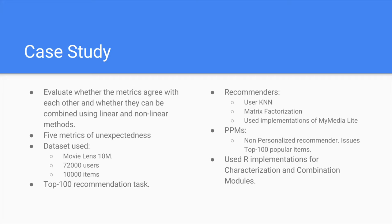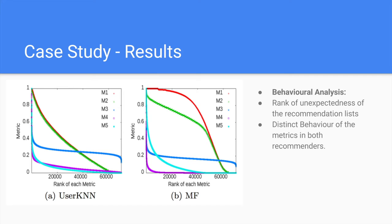For the sake of practical use of our framework, we implemented a case study of unexpectedness metrics. We want to analyze our framework's applicability in real scenarios. We applied our framework to the MovieLens dataset with 10 million reviews, 72,000 users, and 10,000 items. We evaluated the unexpectedness of two recommenders — user KNN and matrix factorization — with regard to the five unexpectedness metrics previously mentioned, using the MyMediaLite implementations. For metrics requiring a primitive prediction method, we used a non-personalized recommender issuing the top 100 most popular items. We showed the outputs of the characterization and combination modules, ranking the recommendation lists from most unexpected to least unexpected according to each metric.